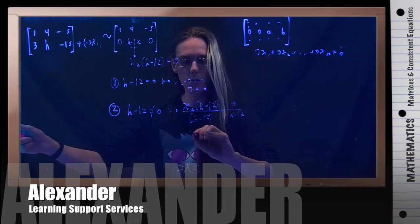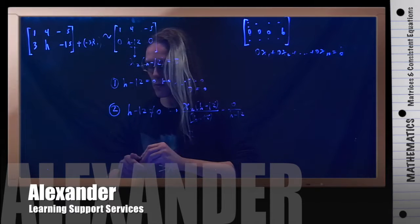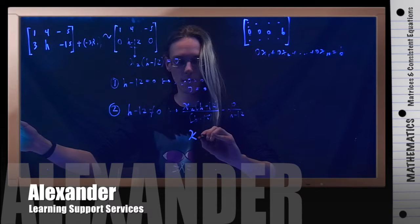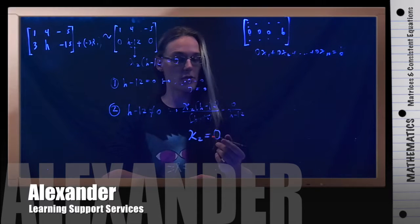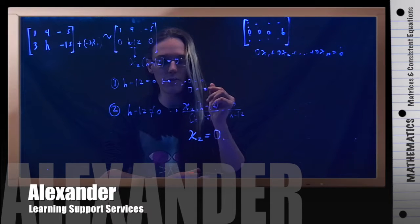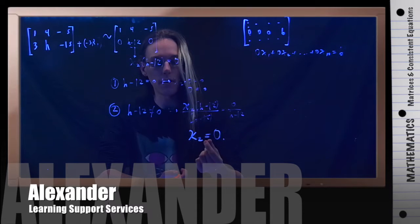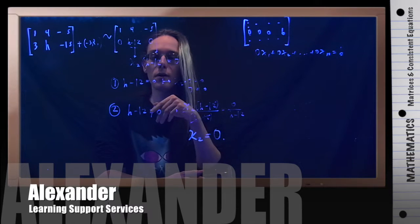So I would have x2 equals 0. 0 over something not zero is just 0. And so now in this case, x2 isn't free. x2 is very specifically the value 0. But now notice, I know what x2 is. I can plug it in here and solve for x1.